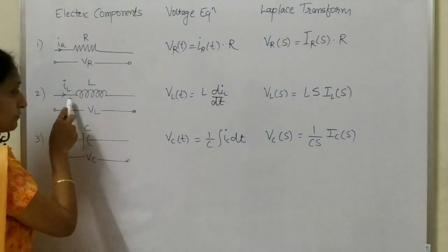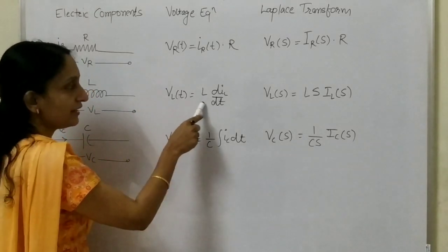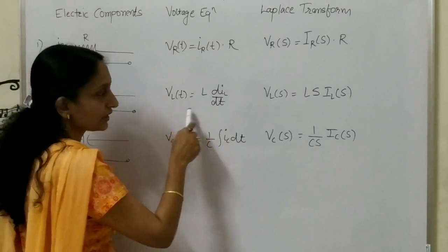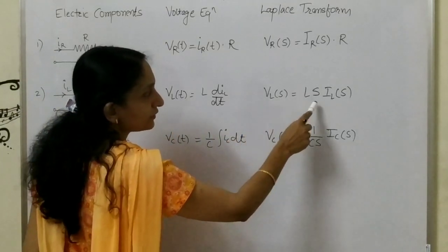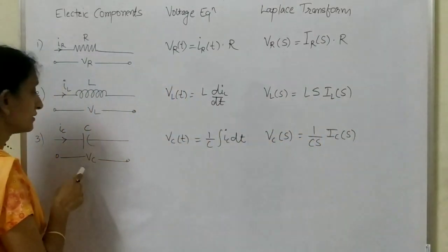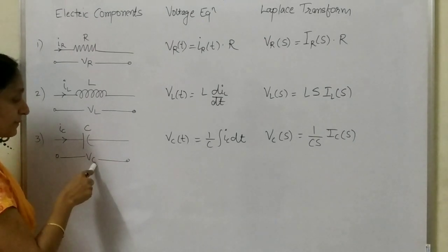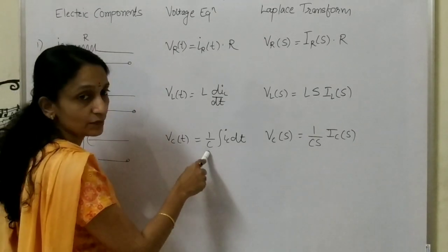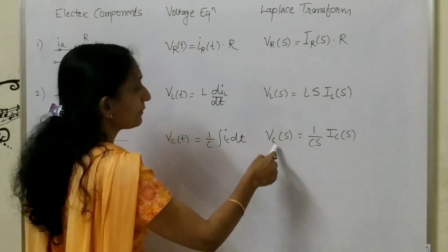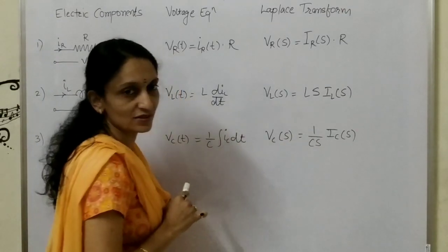Taking the Laplace transform of the inductor equation gives VL(S) equals Ls·IL(S). The third component is the capacitor. The voltage across the capacitor is Vc(T) equals (1/C)·∫IC dt. Taking the Laplace transform gives Vc(S) equals (1/Cs)·IC(S). These are the voltage equations. If a parallel circuit is there, you can rearrange these equations to get the current.